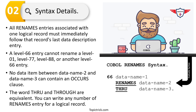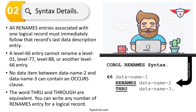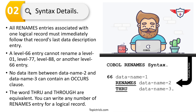Data-name-2 and data-name-3 are regrouped under data-name-1. The first important rule is that all rename entries associated with one logical record must immediately follow that record's last data description entry. The second important point is that a level-66 entry cannot rename a level-01, level-77, level-88, or any other level-66 entry.